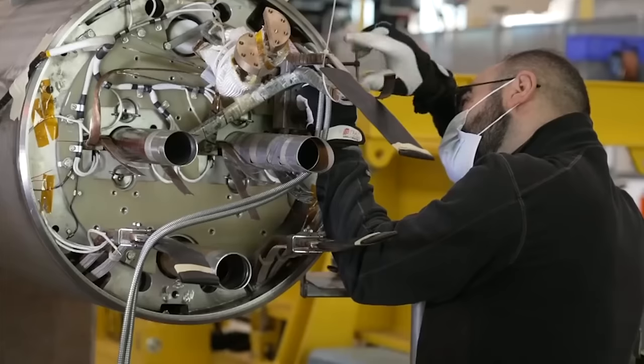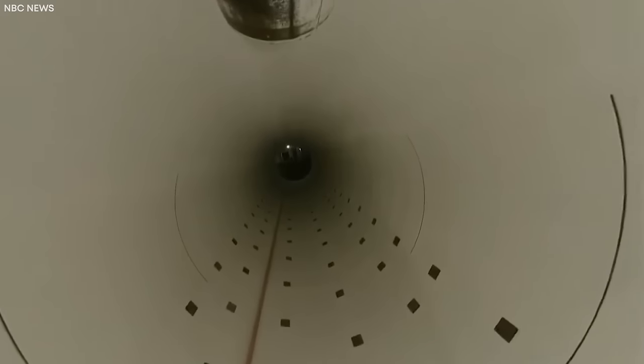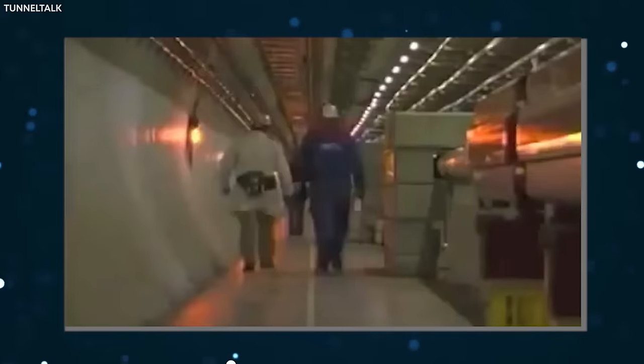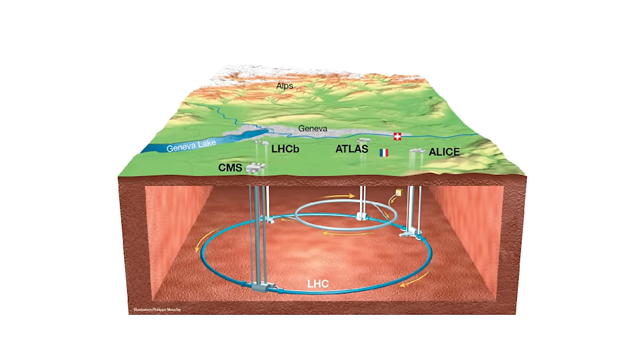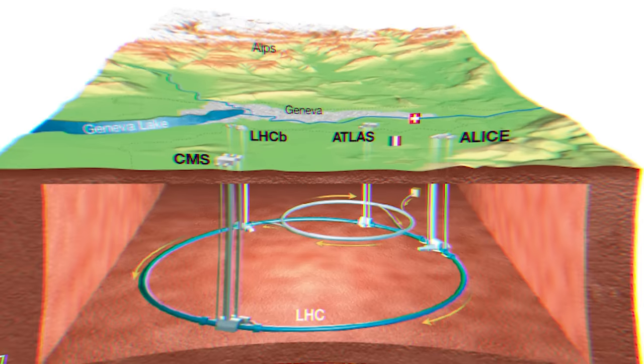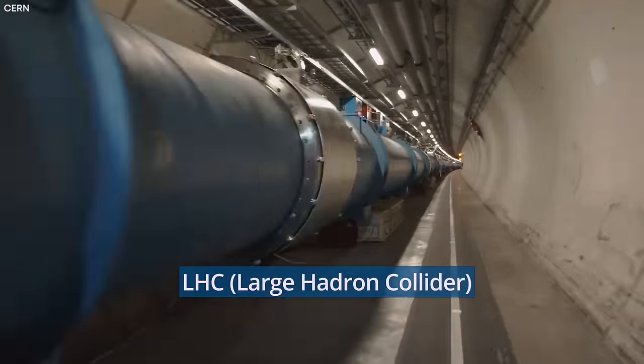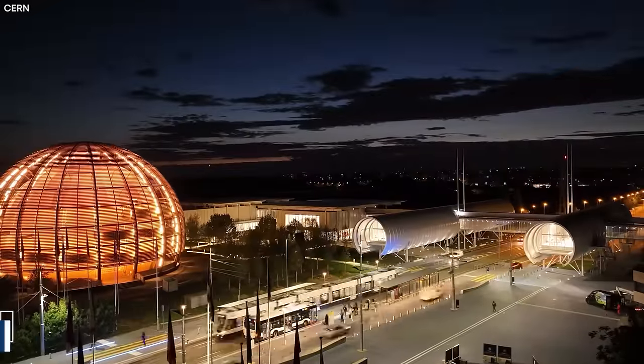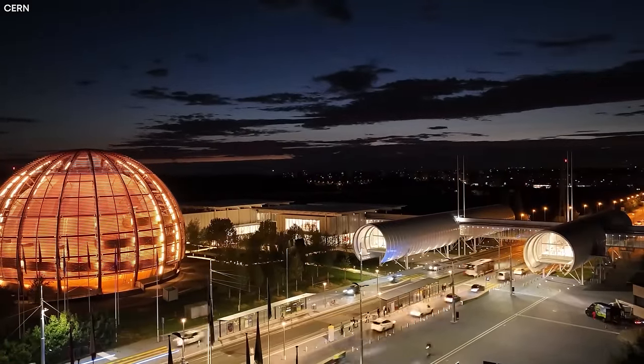The construction of the LHC was no small feat. Imagine a massive tunnel, 27 kilometers in circumference, hidden 100 meters beneath the Earth's surface. That's where the LHC resides, stretching beneath the France-Switzerland border near Geneva. The LHC is a scientific marvel, the largest and most powerful particle accelerator in the world. It was the brainchild of the European Organization for Nuclear Research, also known as CERN.